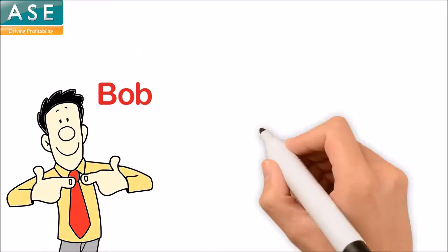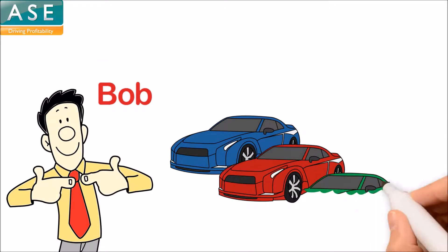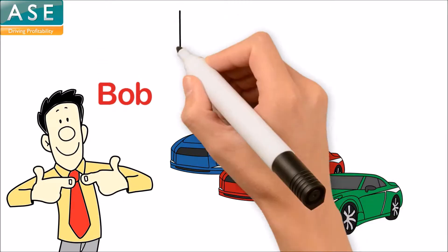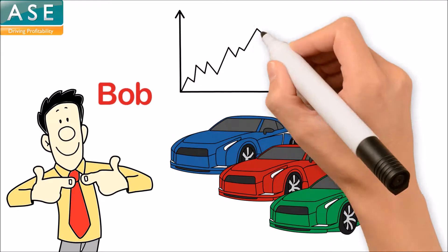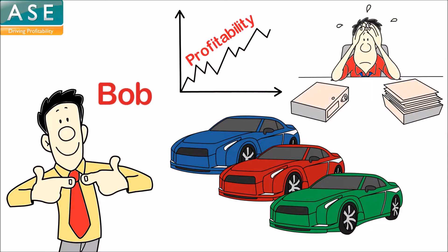This is Bob. Bob owns a car dealership group. Bob wants to improve his profitability, but doesn't understand overhead absorption.